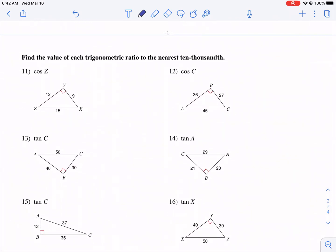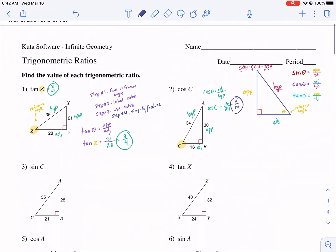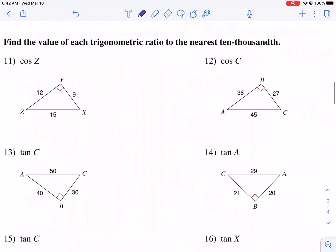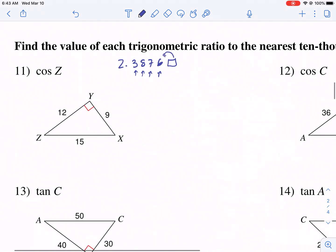Now what is it talking about with this one? Find the value of each trigonometric ratio to the nearest 10,000th. Ooh, 10,000th. Wow. Really? So just a quick clarification. If we have the number like 2.3876, this would be 100th. I'm sorry. Tens, hundreds, thousands, 10,000th. So we're going to go to four digits. So we really need to go to a fifth digit so that we can round.